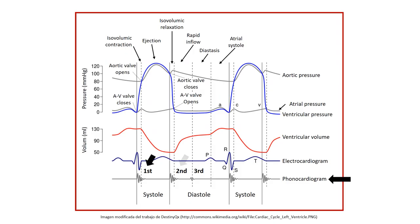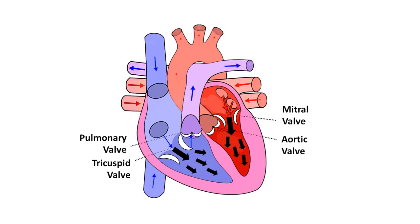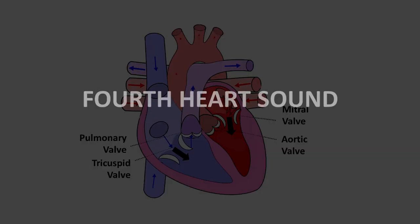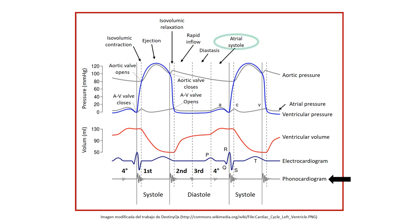The third sound is a diastolic sound that occurs after the second tone and has a very low frequency. It is caused by sudden filling of the ventricle. Generally, the third sound is not audible physiologically, although it can be heard in children, in whom it does not usually indicate pathology. The fourth sound is a presystolic sound heard before the first sound, due to the vibration produced by atrial contraction against a poorly compliant ventricle. This sound is very low pitch and is usually audible only in pathological processes, and is best heard at the apex.